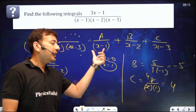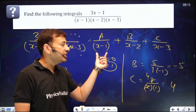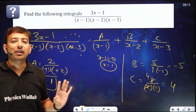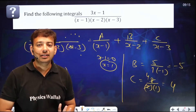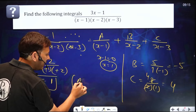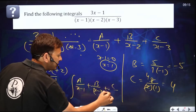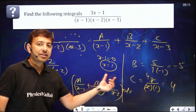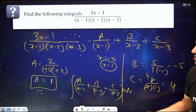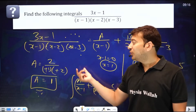Let me repeat: whatever factor you want, put that factor equal to zero. If you want A, put its linear factor to zero, hide it in the expression, and substitute in the remaining part — you'll get your value instantly. After this, everyone knows how to proceed: integrate A/(x−1) + B/(x−2) + C/(x−3) dx, substituting A, B, C values, since the integration of 1/x is log x. That is this magical trick.